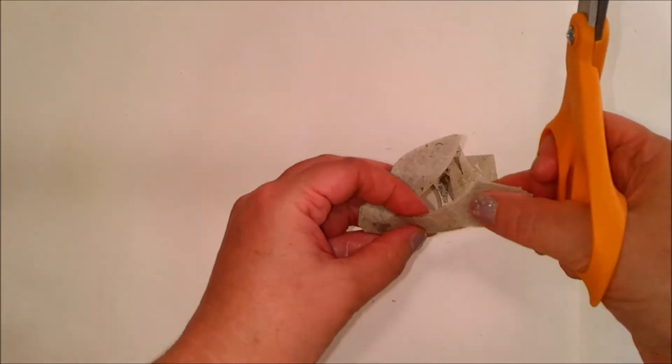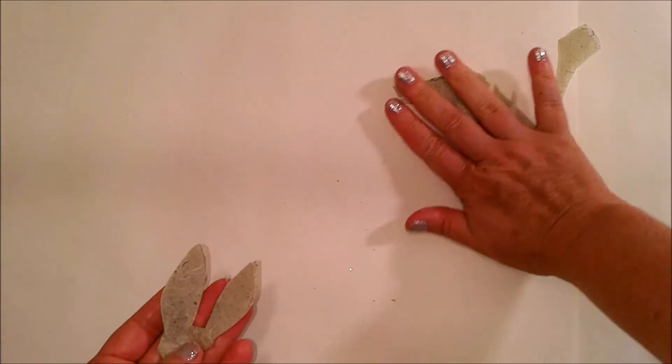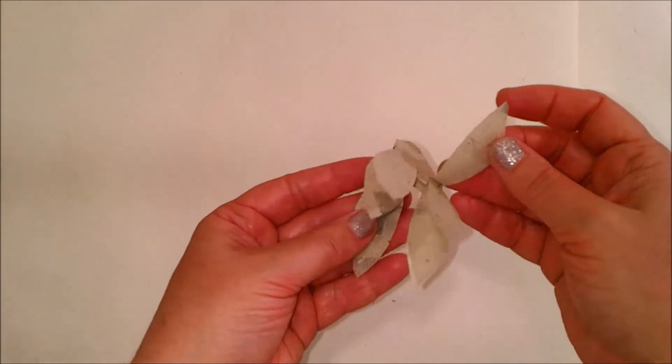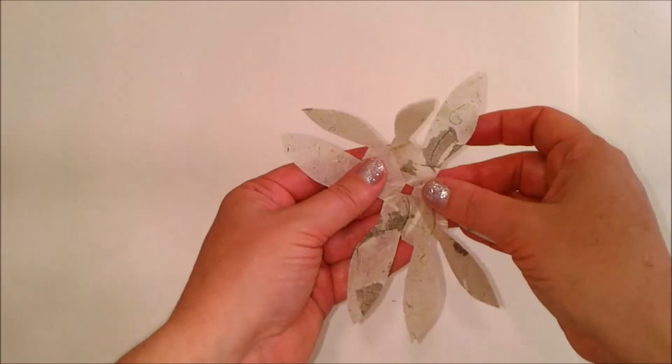And then you just cut off the excess that you're not using. This will be the section that the stem goes through.